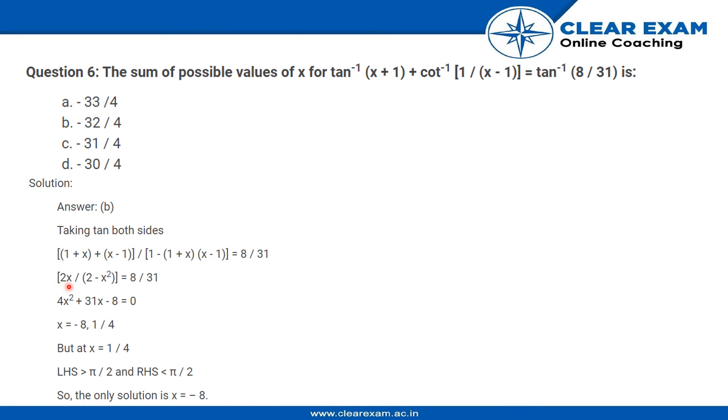Solving this a little bit, we have 2x upon (2 - x²) to be equal to 8 upon 31. So multiplying this entire equation by 31 on the LHS and by (2 - x²) on the RHS, we have 4x² plus 31x minus 8 to be equal to 0.